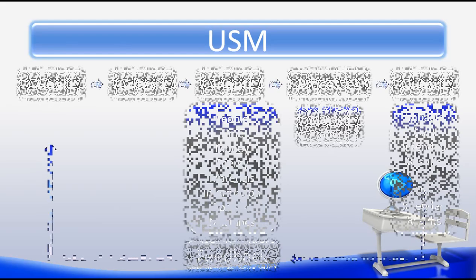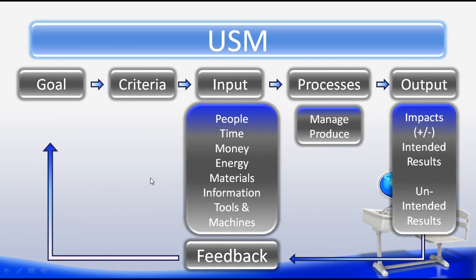A quick review of our USM: our first step is goal, then our second step is criteria and inputs. In our inputs, we have our seven inputs — people, time, money, energy, materials, information, and tools and machines as one input — and there is no specific order in these seven inputs, but all seven must be there. We move on to processes, where we either manage and produce, then we move on to outputs. Our outputs have impacts, which can either be positive or negative, and we also have intended results based on our stated problem and goal, and unintended results. Finally, we obtain our feedback through the entire system, and this tells us how we're doing with solving that problem.